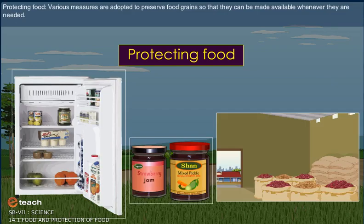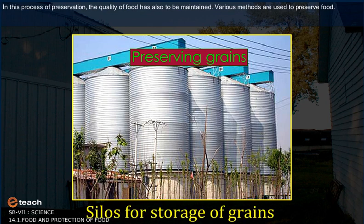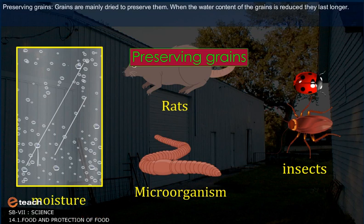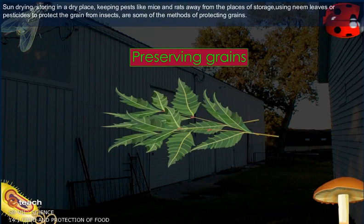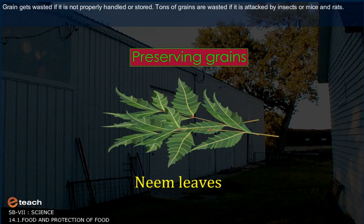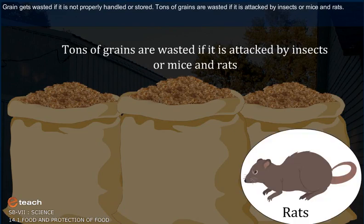Protecting food. Various measures are adopted to preserve food grains so that they can be made available whenever they are needed. In this process of preservation, the quality of food also has to be maintained. Grains are mainly dried to preserve them. When the water content of the grain is reduced, they last longer. Sun drying, storing in a dry place, keeping pests like mice and rats away, and using neem leaves or pesticides to protect grain from insects are some of the methods. Tons of grains are wasted if attacked by insects, mice, or rats.